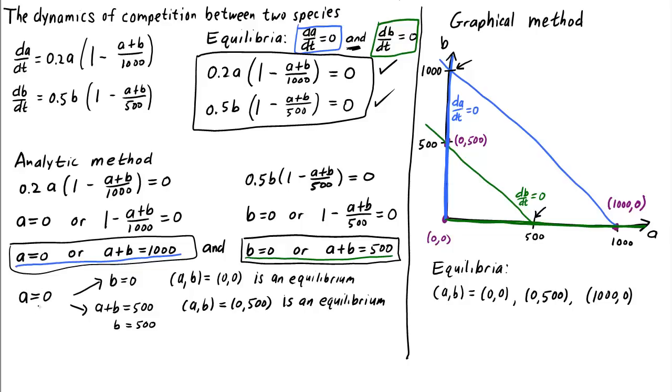We found all the equilibria where A is equal to zero. So now let's look at the second equation for the dA/dt equals zero condition, A plus B equals 1,000. If A plus B equals 1,000, we've satisfied the first condition, and now we can turn our attention to the second. dB/dt equals zero, which means B is zero, or A plus B is 500. Let's choose B equals zero, the first one. If B is equal to zero, and A plus B is 1,000, then plugging in B equals zero, we get that A is 1,000. And so we have determined that (A,B) equals (1000,0) is an equilibrium.